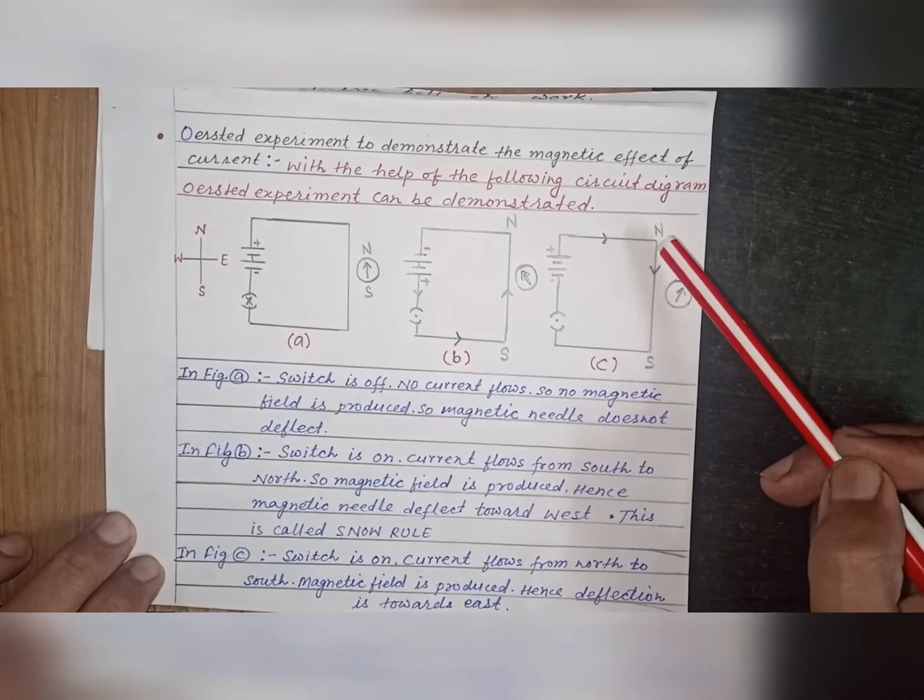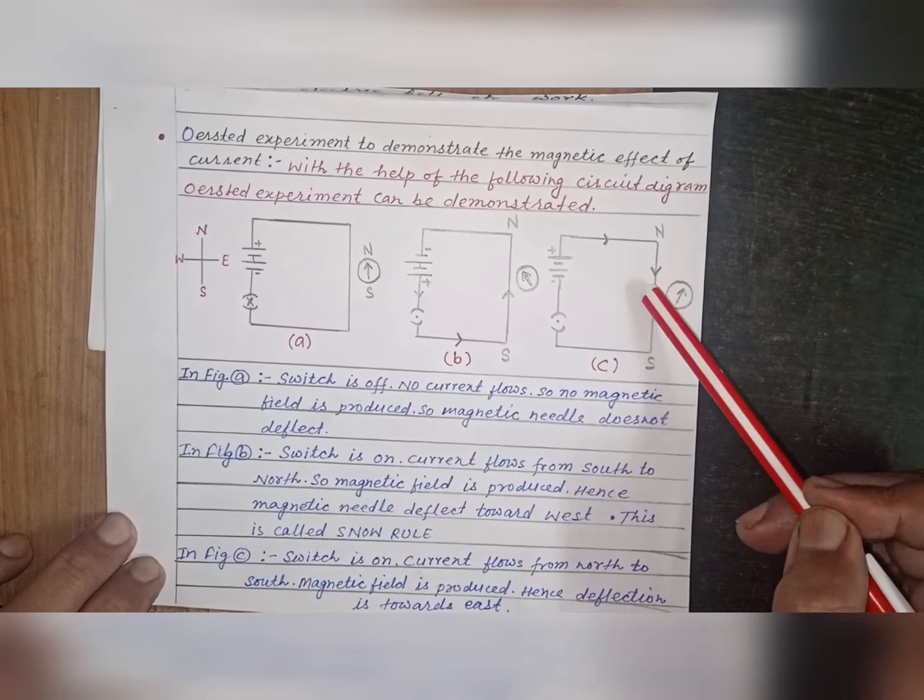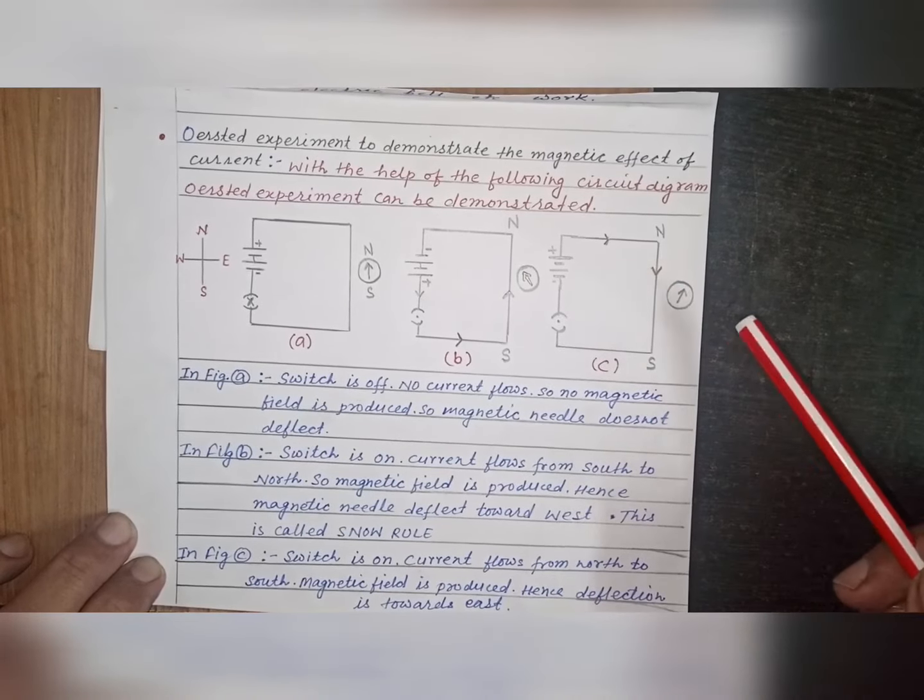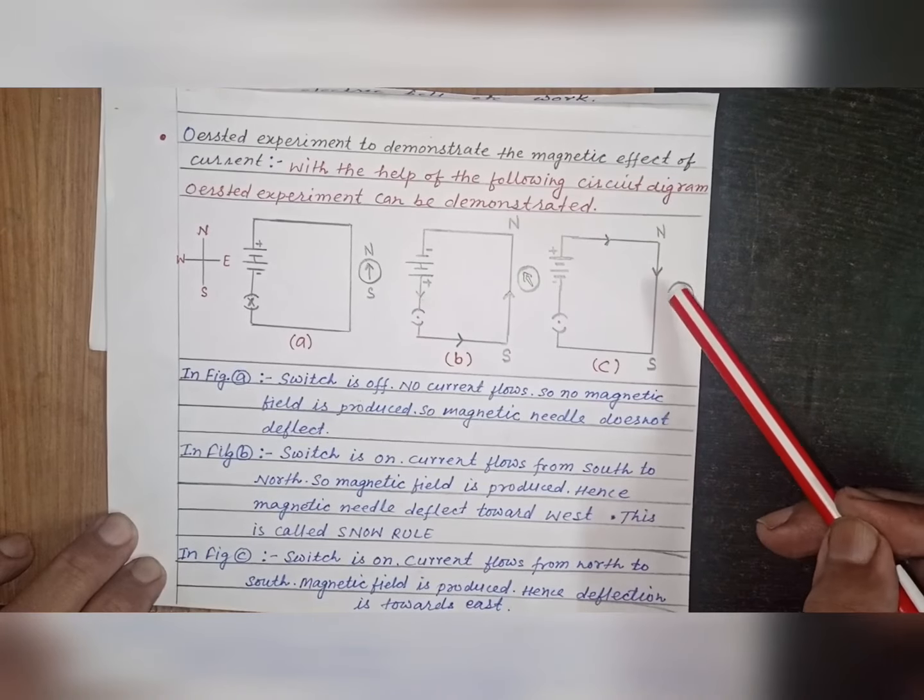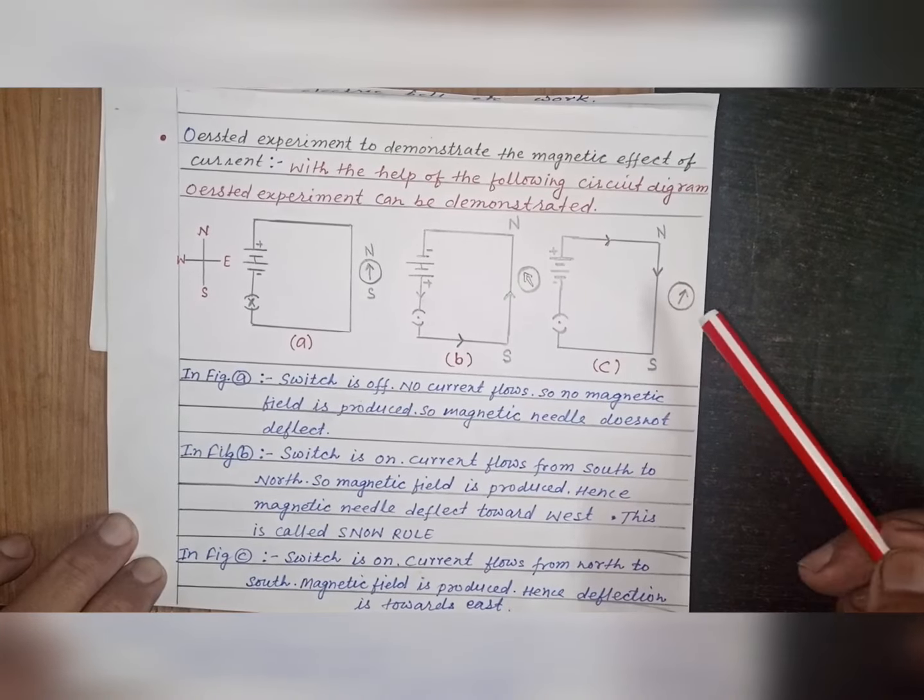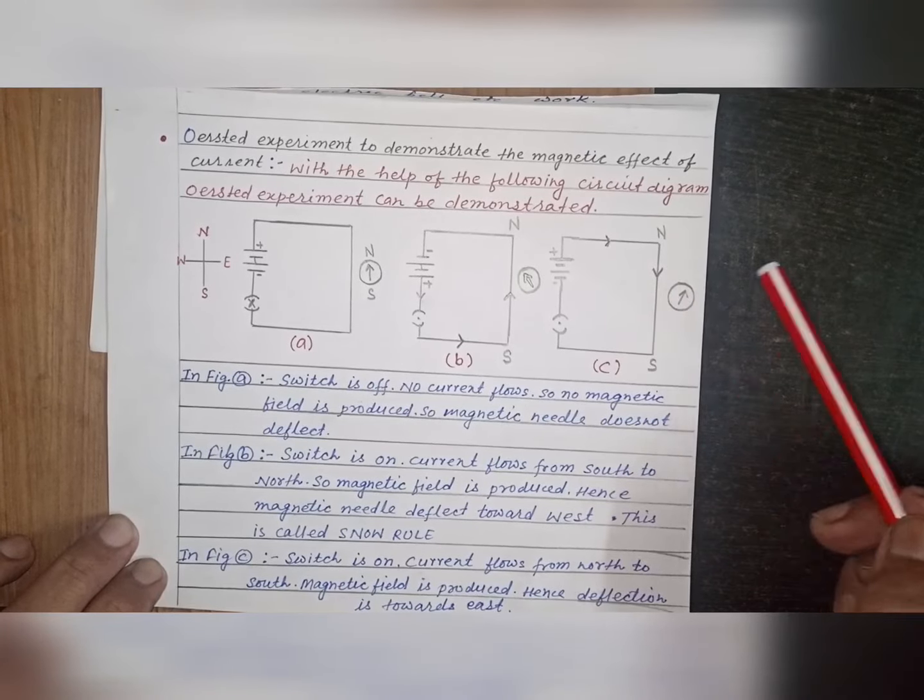That is, current will flow from north to south. Again magnetic field is produced around the wire. Magnetic needle placed below this wire will again deflect. But in this case, deflection will be towards east.